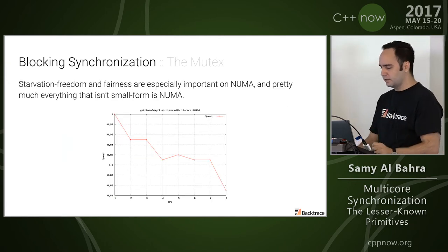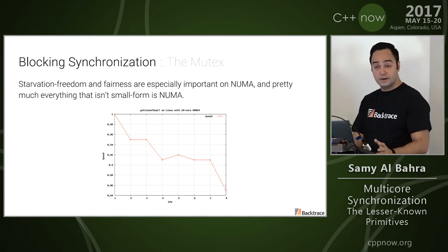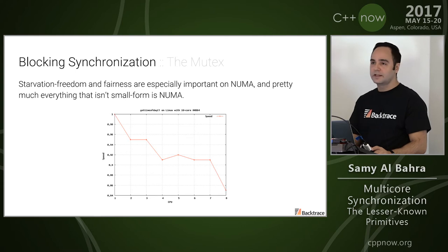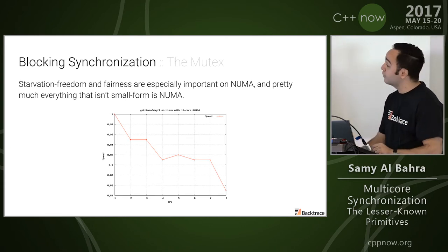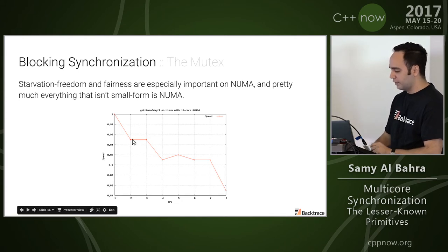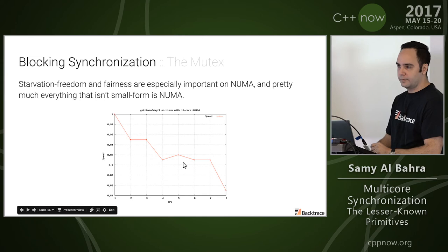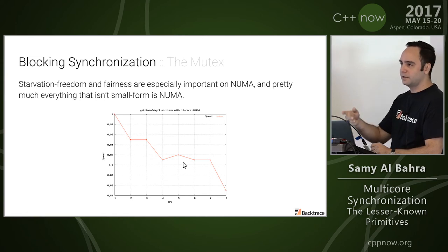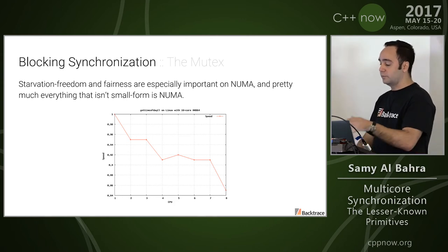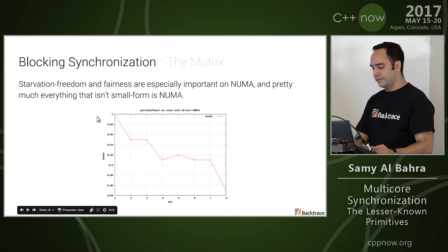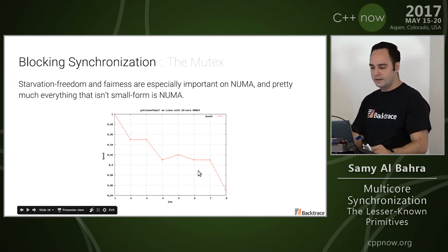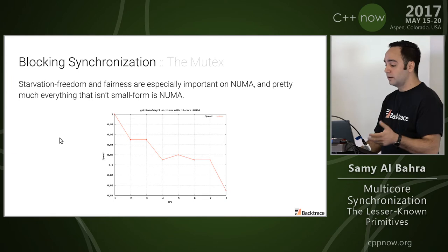One thing I want to touch on is starvation freedom and fairness — this is especially important on NUMA. Pretty much everything is NUMA today, and you do have some very weird artifacts. For example, here I have the throughput of gettimeofday on different cores on a system. All I did was loop, call gettimeofday repeatedly, pin the process on separate cores, and measure throughput relative to pinning to the first core. You can see a significant decrease in throughput due to NUMA effects.